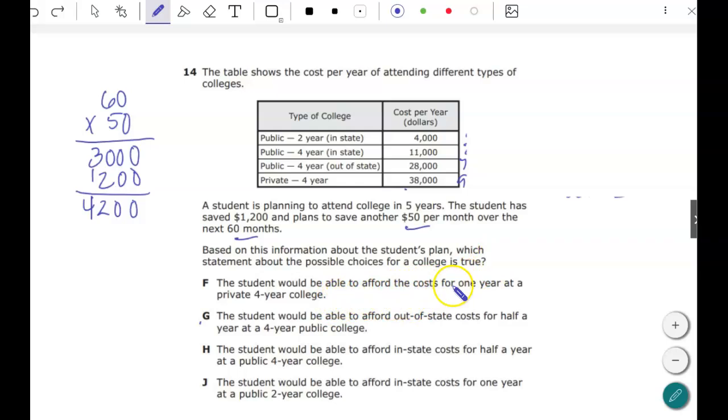F, the student will be able to afford the cost for one year at a private four-year college. No, that's too high, so that's not working. The student will be able to afford out-of-state costs for half a year at a public college. So it says out-of-state. This is per year. So $28,000 divided by two, because that's for the year, so half a year divided by two. That cost would be $14,000. So the student does not have enough.